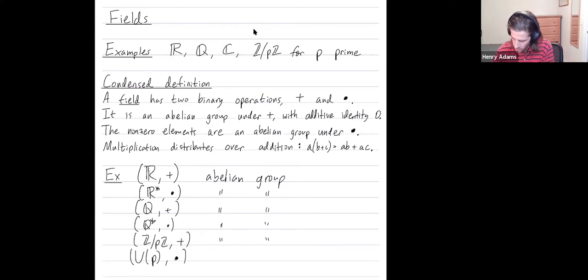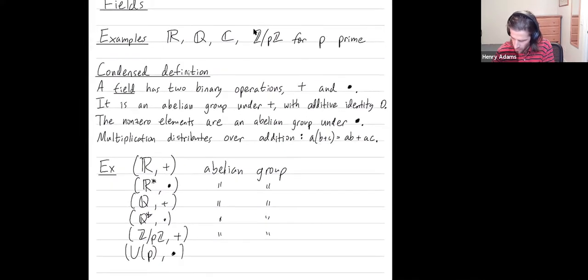Let me replace this p here with an n. n is any arbitrary integer. I use p when I'm talking about a prime integer. For any integer n, Z mod nZ is an abelian group and Un under multiplication mod n is an abelian group.